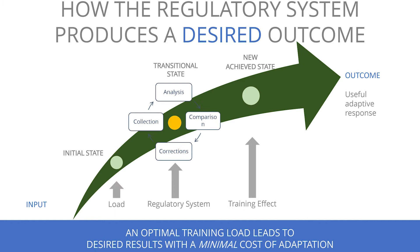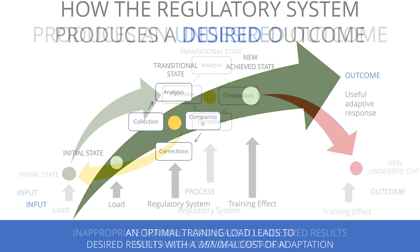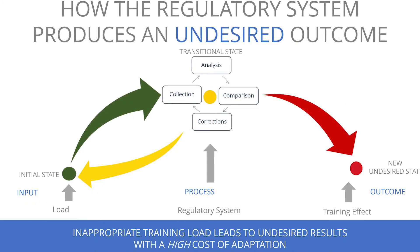If I measure my current functional state of the CNS and my regulatory system is optimally ready to perform this particular training load, it will be able to deliver me to a new achieved state and I will gain a training gain. In the opposite situation — if my body is not ready, my initial state is already poor, and I still apply the same amount of training load — my regulatory system cannot create new adaptations because previous adaptations are not completed. The regulatory system is stuck in a transitional state, trying to decide whether to reject the stimulus or attempt to create a positive result.